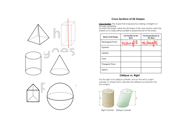Now looking at the pyramid: if we were to make a cut parallel to the base — the base is on the bottom — the shape exposed would be a square, since the base is a square. And if we were to cut perpendicular — cutting it the other way — that shape would be a triangle.